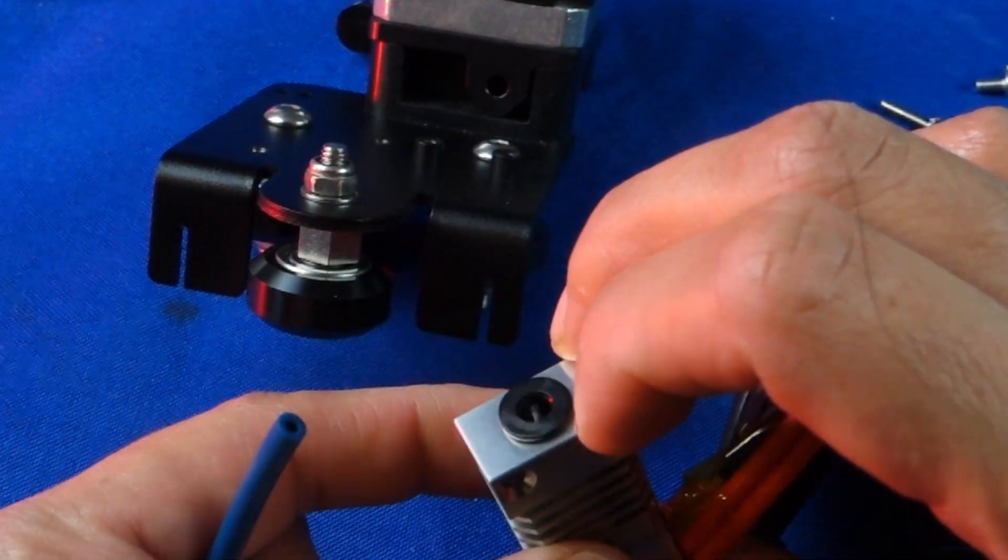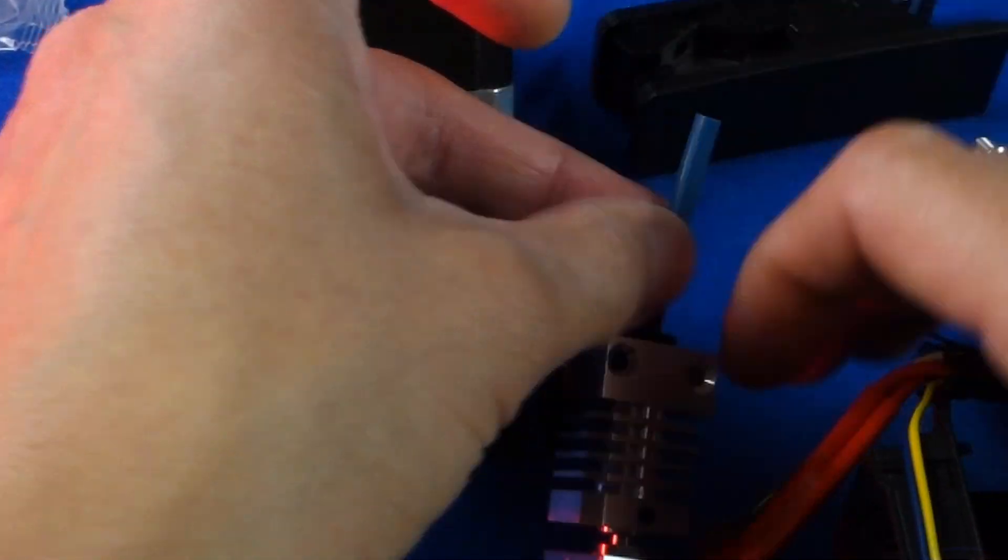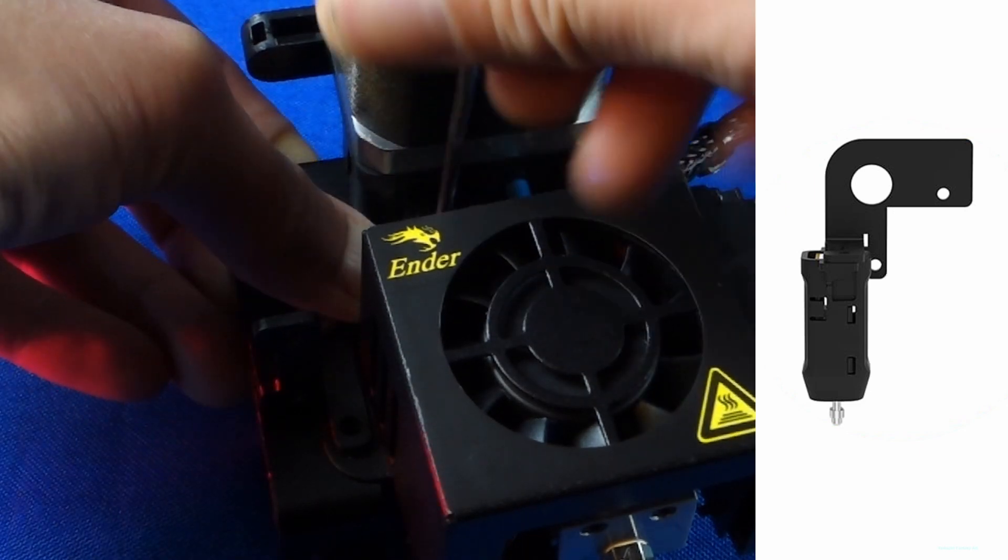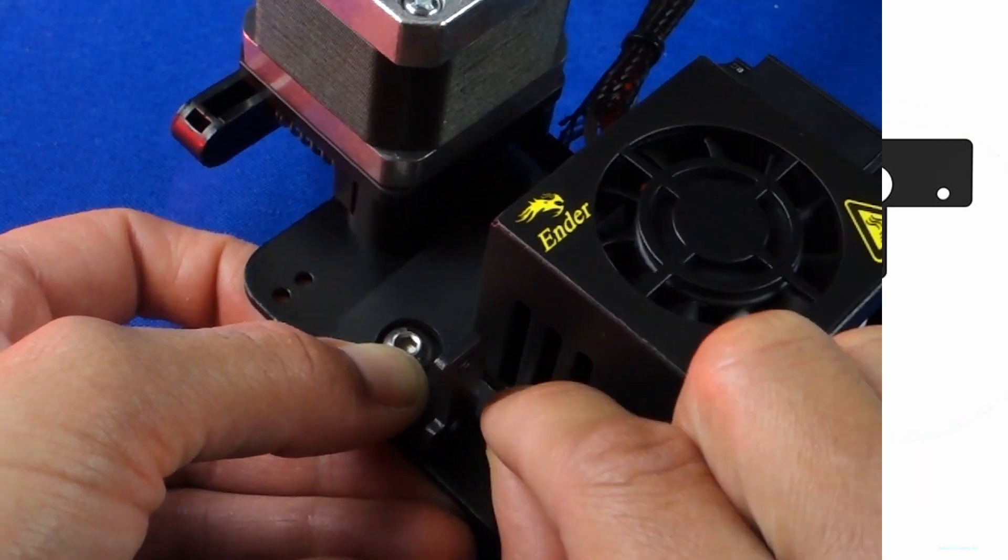While reinstalling the hotend assembly cover we can also attach the CR Touch as well by using the provided mount. In my case I was able to use this adapter which lined up perfectly with the mounting plate.